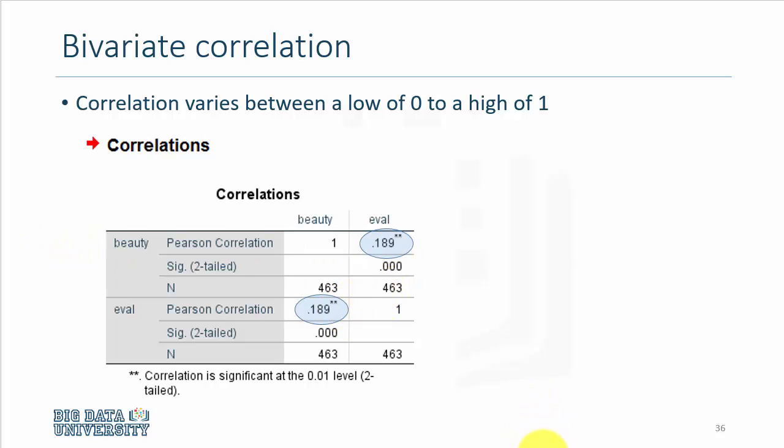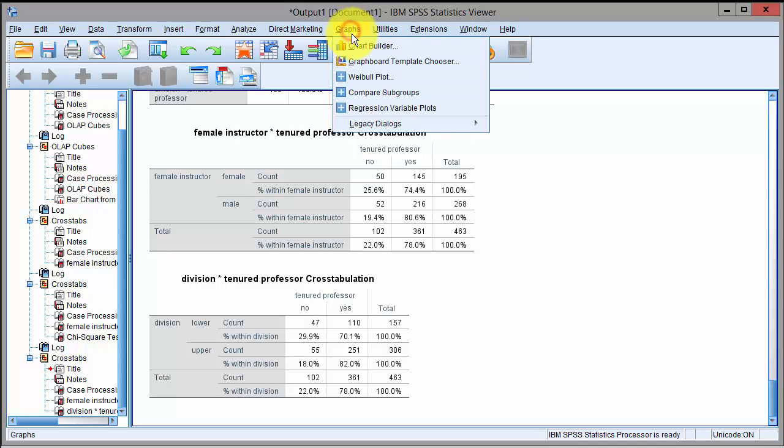We'll discuss that later. How do you create a scatter plot and compute the correlation coefficient in SPSS? We click on graphs, chart builder.